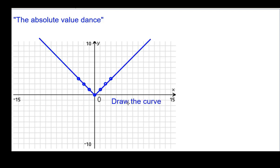Draw the curve. And we'll just show, again, the axis of symmetry. So here's the graph of y equals absolute value of x, using the absolute value dance.